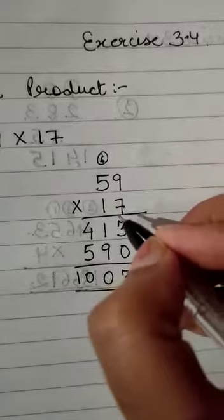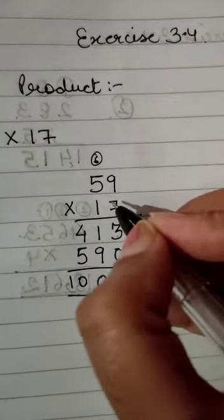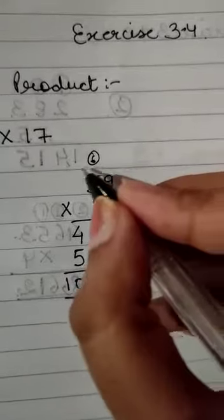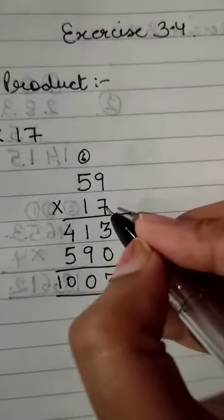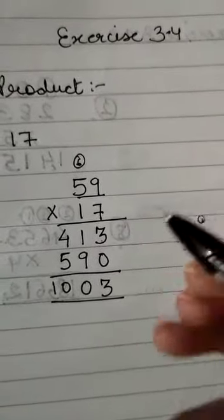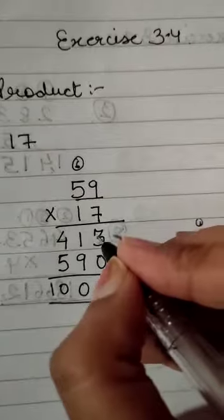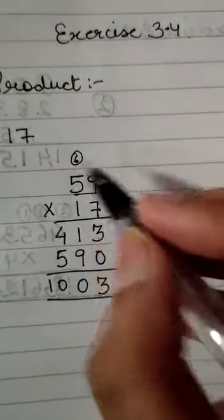So what we will do here is at the ones place it is 7. We will multiply 7 with 59. So 7 nines are 63. We will write 3 here and the carry of 6 moves to the tens place.